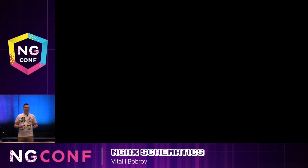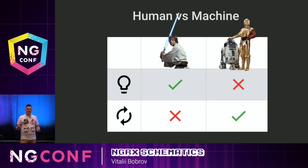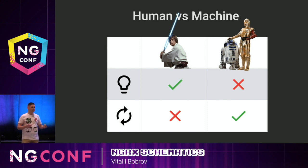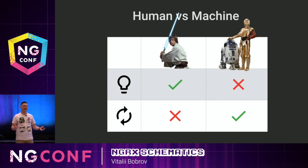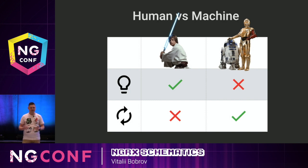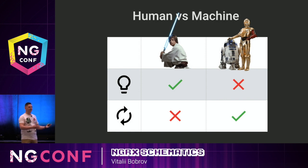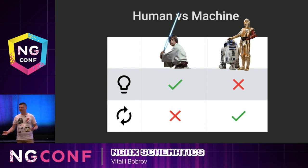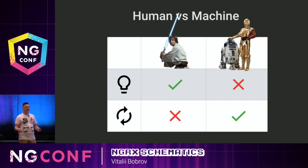When we are speaking about people and machines, probably humans are better at creative tasks — at least for now, when we haven't gotten machine learning enough to do that. On the other hand, machines are better at tasks that repeat over and over again. They won't be exhausted, and you should remember that robots don't cry.